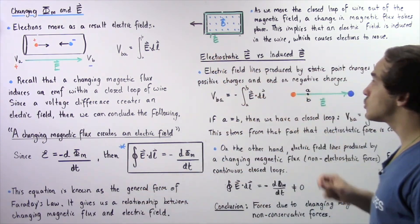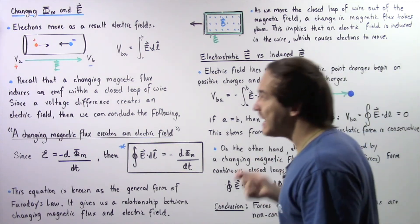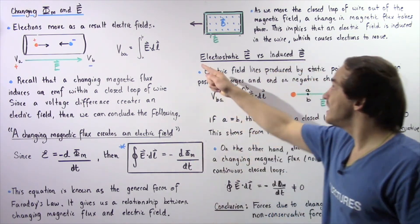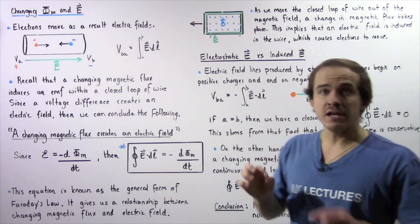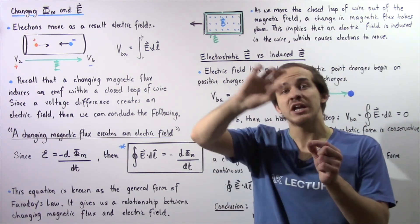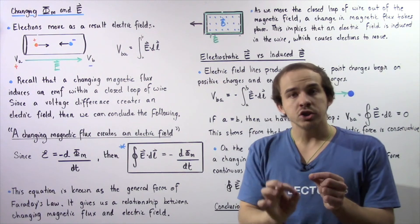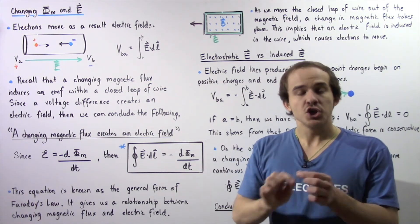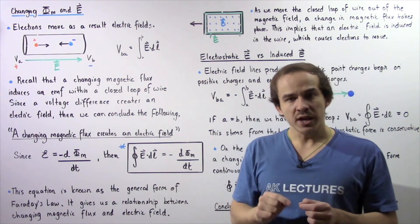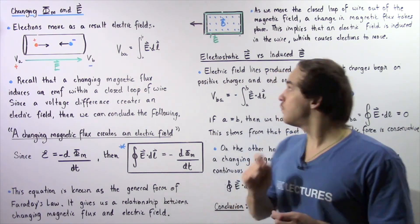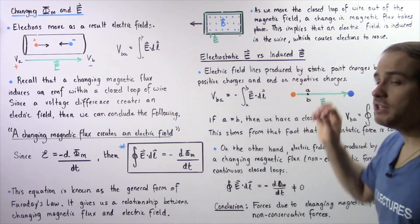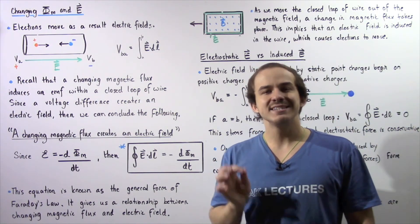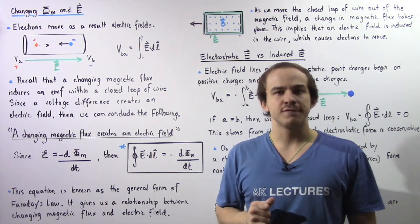The electrostatic electric field is a conservative electric field. In the electrostatic case, if we take a point charge and move it around a closed pathway, the work done will be zero — the voltage will be zero. On the other hand, that is not true for the induced electric field, because the induced electric field is not a conservative electric field.